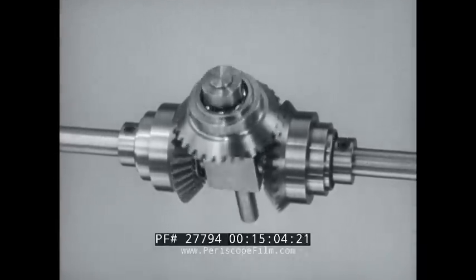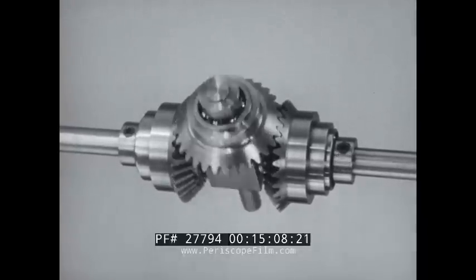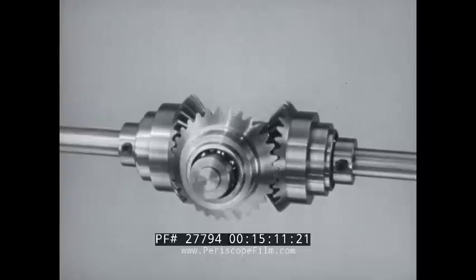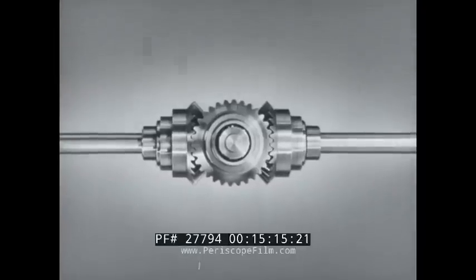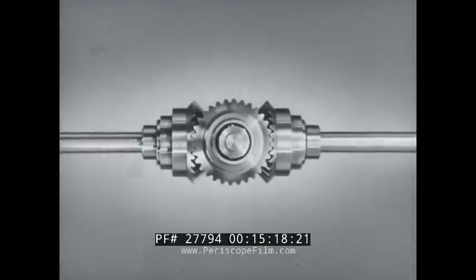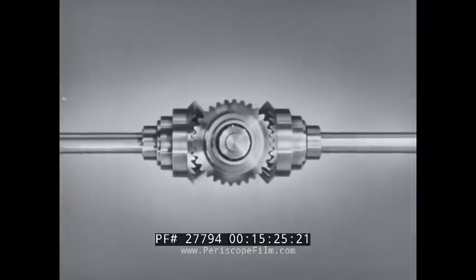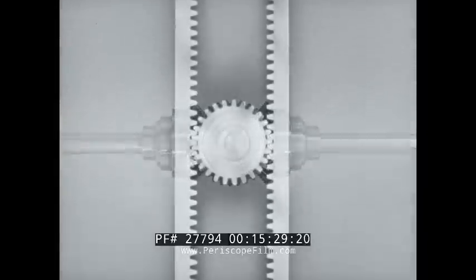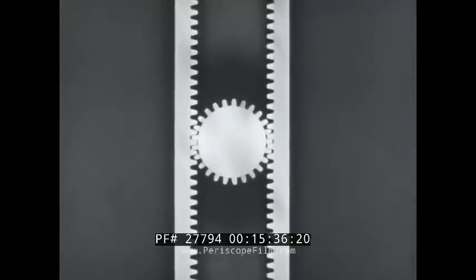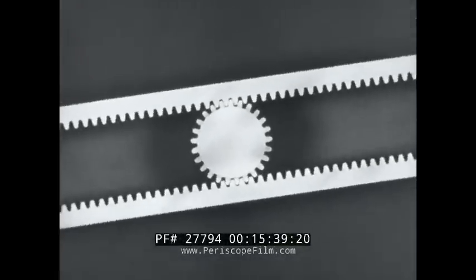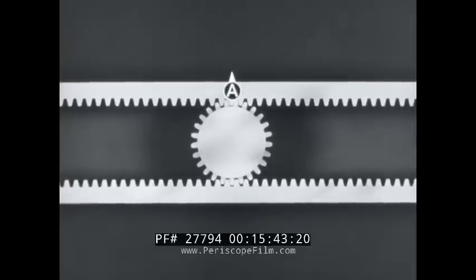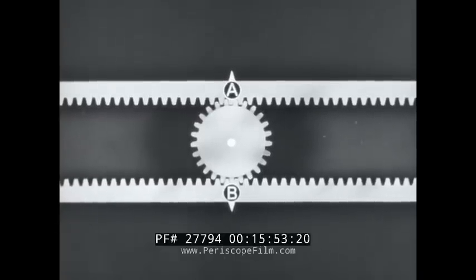To study its operation, it is necessary to count and compare revolutions of the end gears and the spider shaft. That isn't easy to do. We'll show the differential action in a way that's easier to follow. Essentially, this differential is a gear between two gears. Now imagine that you cut the end gears and make them flat. You now have a pinion between two racks. The operating principle is the same as the bevel gear type.